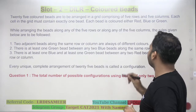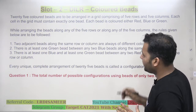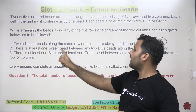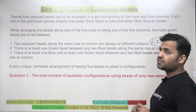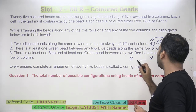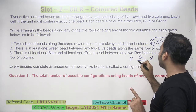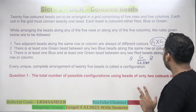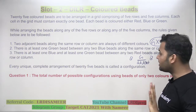Green cannot come with green in two adjacent cells. Rule 2: there is at least one green bead between any two blue beads along the same row or column. So between any two blue beads you need to place at least one green bead. You can place two green beads, but then those two cannot be in adjacent cells, because green cannot come with green in an adjacent cell.